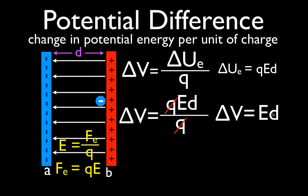The change in potential energy is directly related to the amount of charge, but the potential difference between parallel plates is only related to the electric field strength and the distance between those plates. This equation, V = Ed, can only be used for parallel plates because you need a uniform electric field. With parallel plates you have a uniform electric field; with point charges you do not. So parallel plates, uniform electric field — you can use this equation.